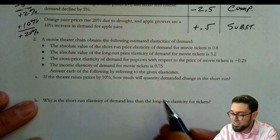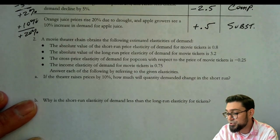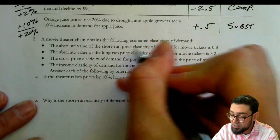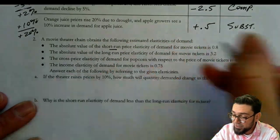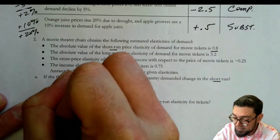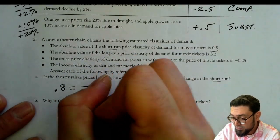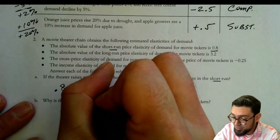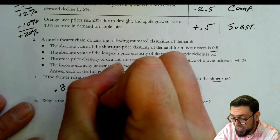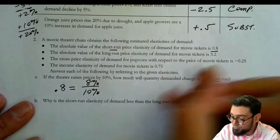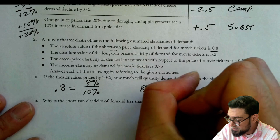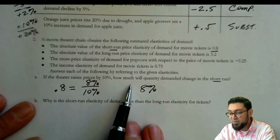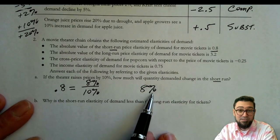If the theater raises prices by 10%, how much will quantity demand change in the short run? So it tells us in the short run. So we're going to use the short run value, and it gives us 0.8. So we know 0.8 is going to be equal to the 10% change here in price. And so my quantity demanded change will be 8%. So my answer would be 8%.